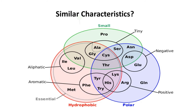What do we understand by similar characteristics? Proteins are grouped into several character classes: small, hydrophobic, polar, negative, positive, tiny, aliphatic, aromatic, and essential. Similar characteristics would be shown as proteins sharing the same character class — for example, aspartate and glutamate, both of which show negative behavior.